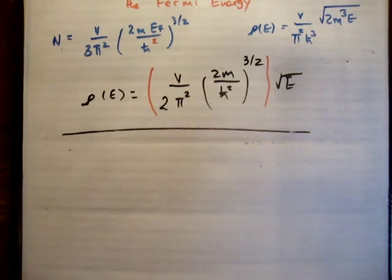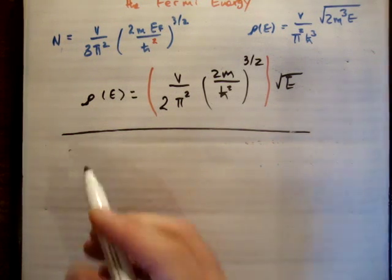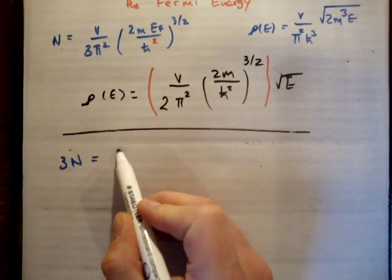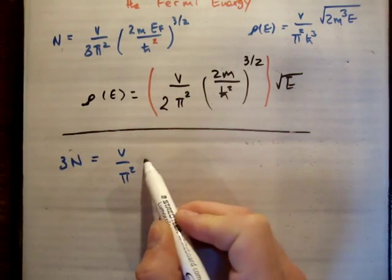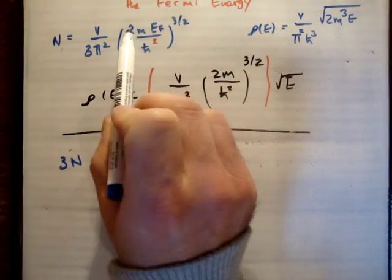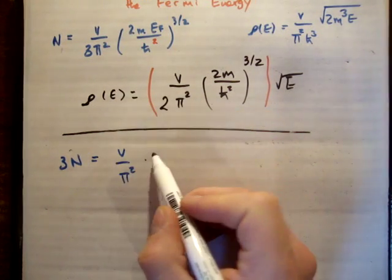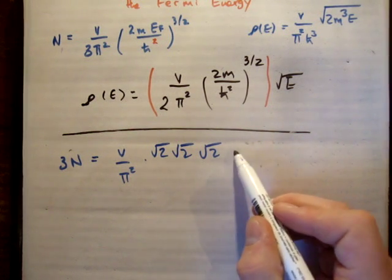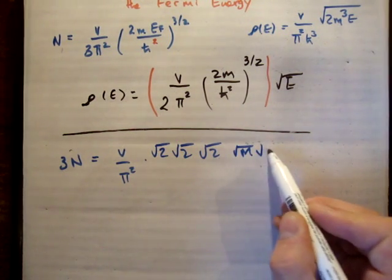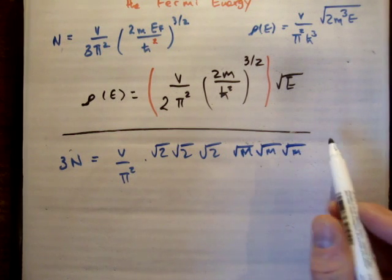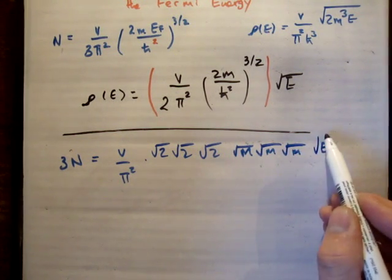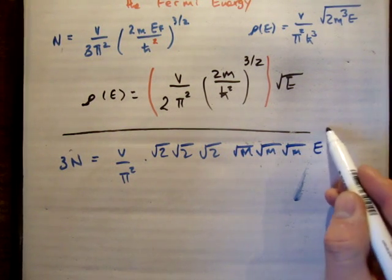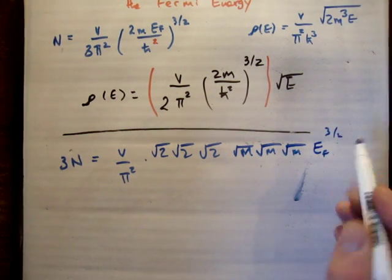So the first thing I'm going to do is bring up my 3, so I'm going to get 3N equals V over pi squared. Then we're going to say it's the square root of 2 three times, it's the square root of m three times, and the square root of E Fermi. We'll just say E Fermi to the 3 over 2, it's probably easier if I do that. E Fermi to the 3 over 2, like this.